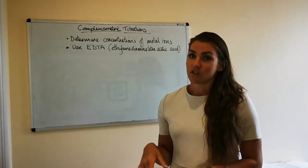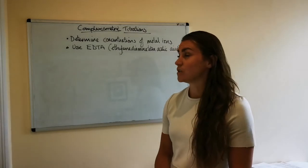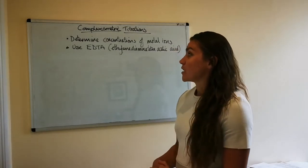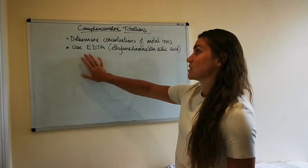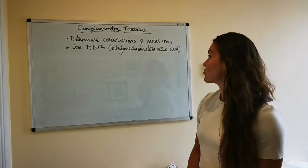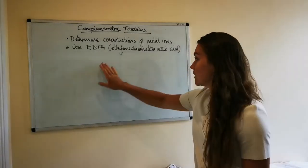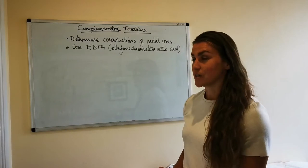Complexometric titrations are good for calculating the concentration of any metal ions in a solution. In order to do them you tend to use this chemical called EDTA - ethylenediamine tetraacetic acid. It's a really long-winded name but everyone just calls it EDTA, so I wouldn't worry about being able to say the whole name.